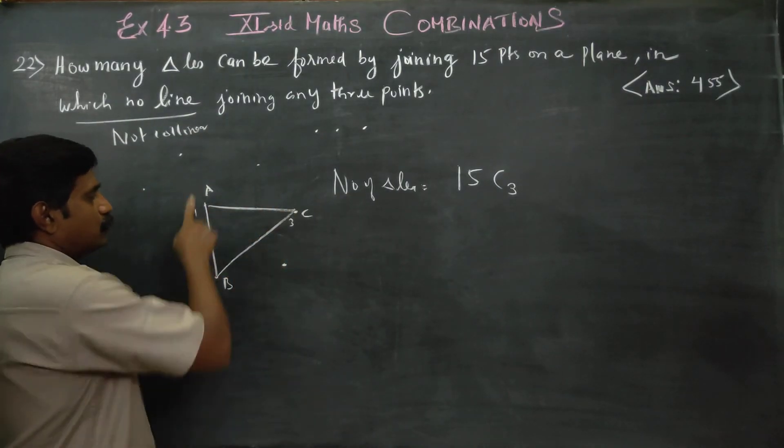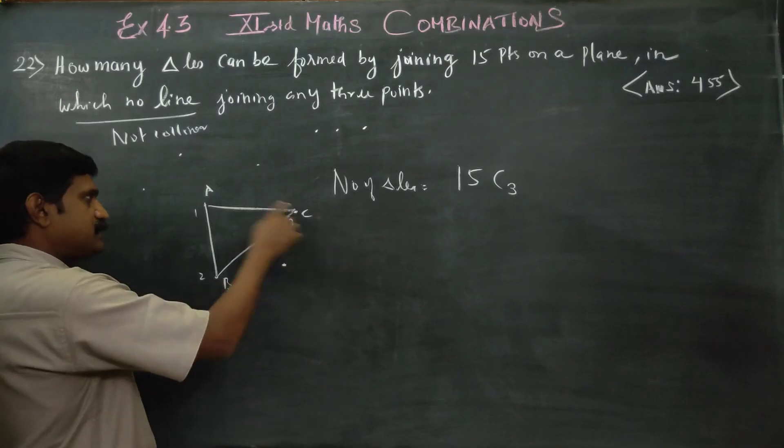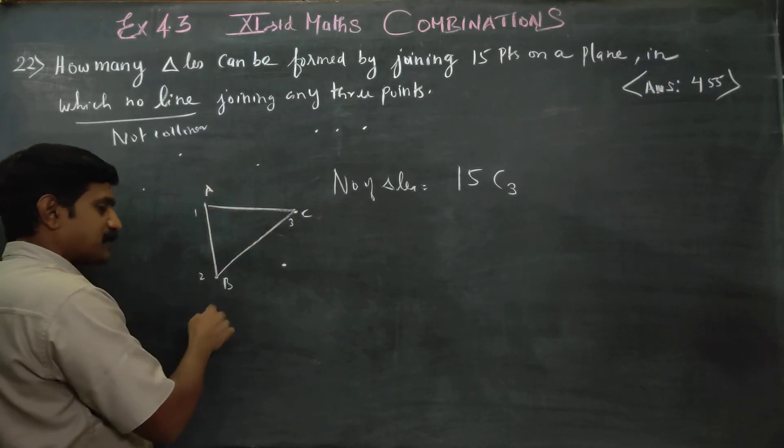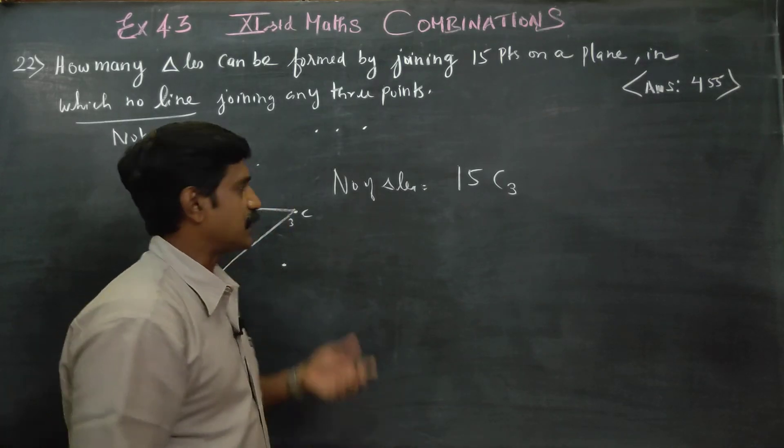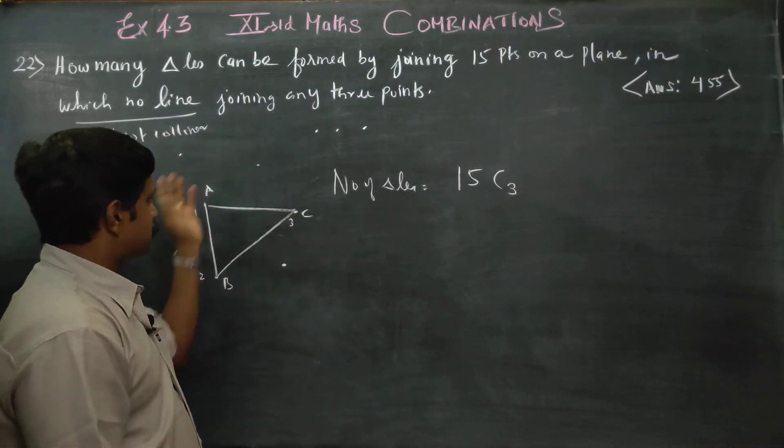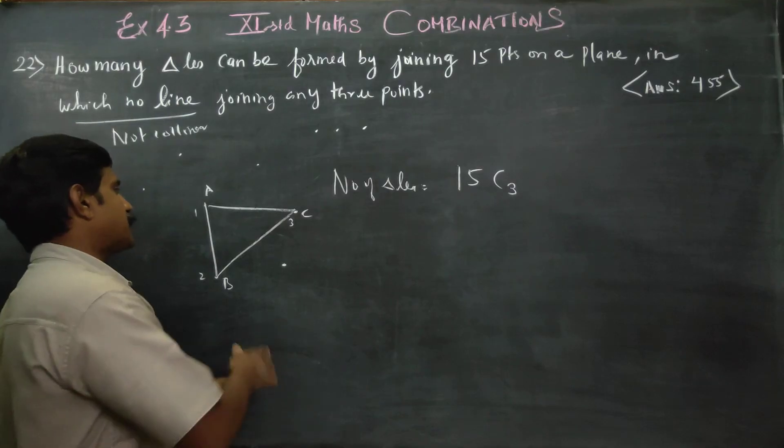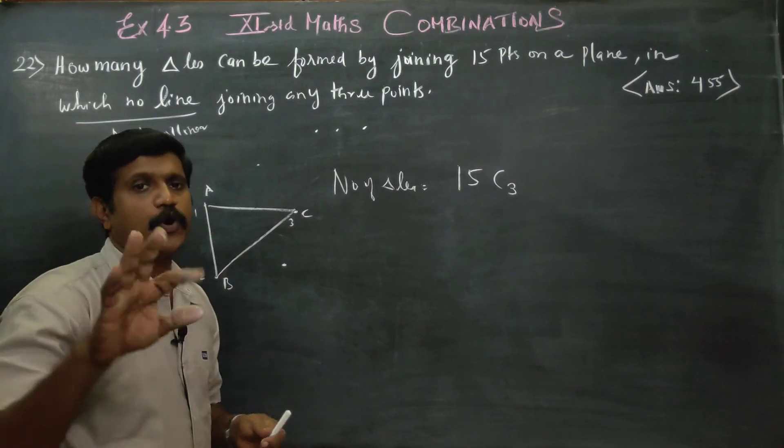ABC is a triangle, BCA is a triangle, CAB is a triangle - all pertain to the same triangle. Order is not important. You have to go for combination.